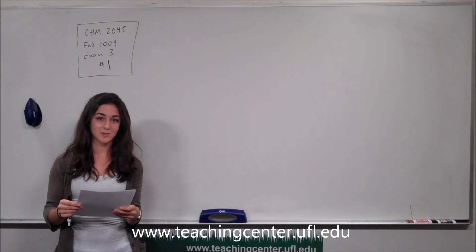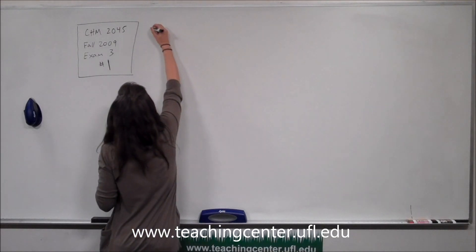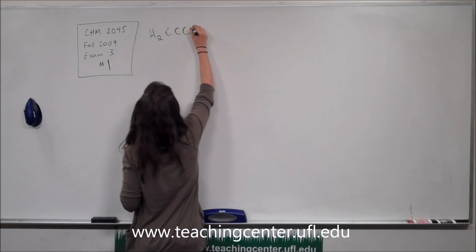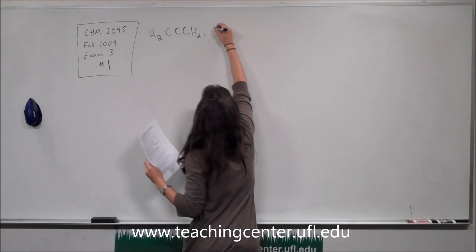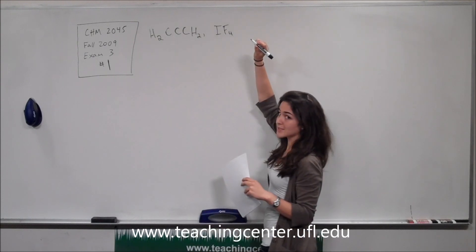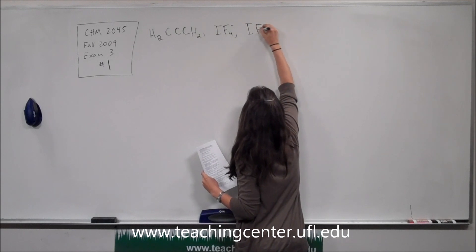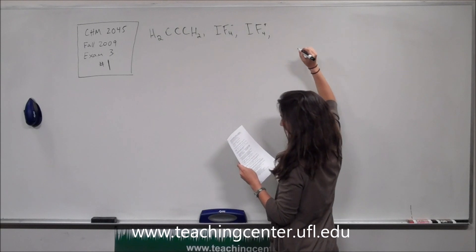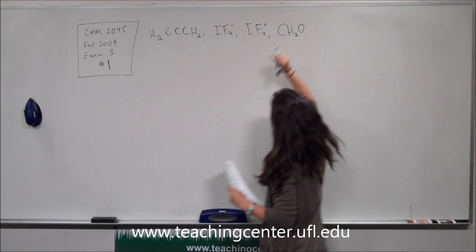They give us four molecules to work with. So the first thing we'll do is write down what we know, which is the molecular formulas. We have H₂CCC H₂, which is carbon. We also have iodine fluoride with four fluorines and a negative charge. The next one is iodine fluoride with a positive charge, and then the last one is CH₂O.